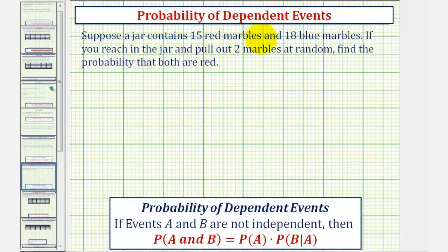Suppose a jar contains 15 red marbles and 18 blue marbles. If you reach in the jar and pull out two marbles at random, find the probability that both are red.